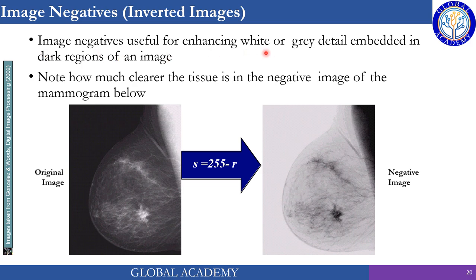Image negative is useful for enhancing white or gray details embedded in dark regions of an image. Note how much clearer the tissues are in the negative image of a mammogram. The information hidden in black color becomes very clear in an inverted or negative image. This simple operation has helped radiologists and oncologists in early detection of breast cancer and may have saved many lives.